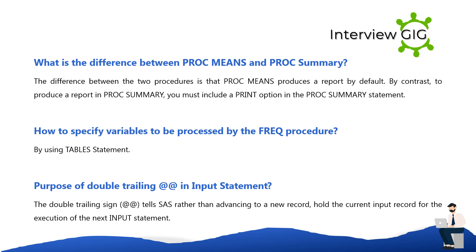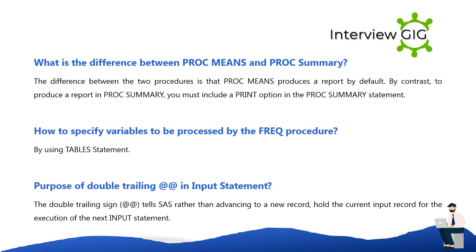What is the difference between PROC MEANS and PROC SUMMARY? The difference is that PROC MEANS produces a report by default. By contrast, to produce a report in PROC SUMMARY, you must include a print option in the PROC SUMMARY statement. How to specify variables to be processed by the FREQ procedure? By using the Tables statement.